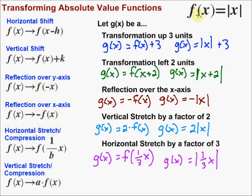When dealing with absolute values, reflecting the parent function over the y-axis is an interesting case. The absolute value function is just a nice V-shape with vertex at (0, 0). If we reflected it over the y-axis, what would happen? We'd put negative x inside the absolute value — but that negative x just comes out as positive still. That negative inside really doesn't have an effect because of the absolute value, so the function looks exactly the same even when flipped over the y-axis.